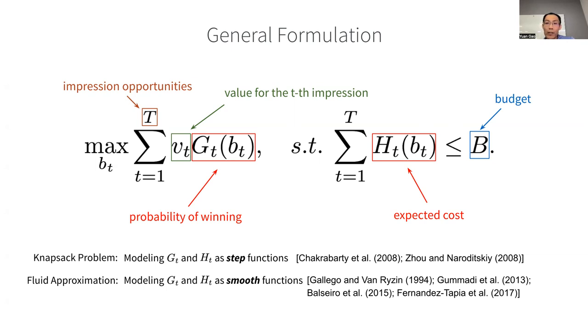So if you model them as step functions, then this becomes a well-known knapsack problem. In reality, it's very challenging to solve because the problem parameters, such as the minimum bid to win for each impression opportunity, is not known beforehand. So we need to resort to some sort of online knapsack solver, which has pretty limited performance guarantees.